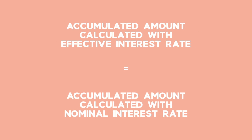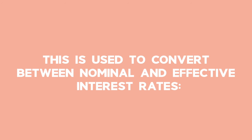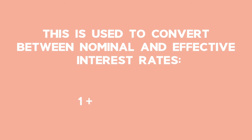we come to a formula where we can change between the two rates. That formula is: 1 plus I equals (1 plus I(M) divided by M), all raised to the power of M.